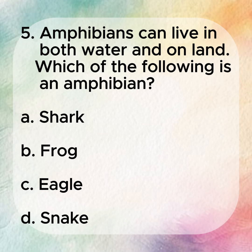5. Amphibians can live in both water and on land. Which of the following is an amphibian? A. Shark. B. Frog. C. Eagle. D. Snake.